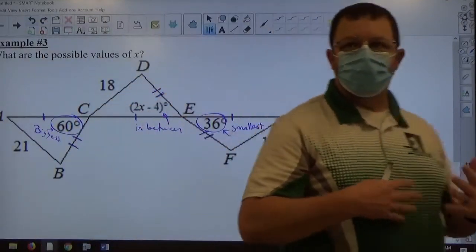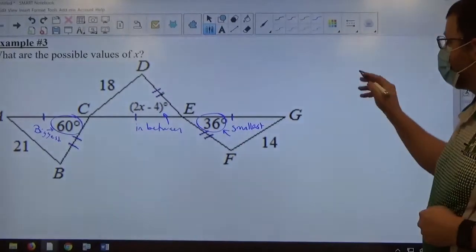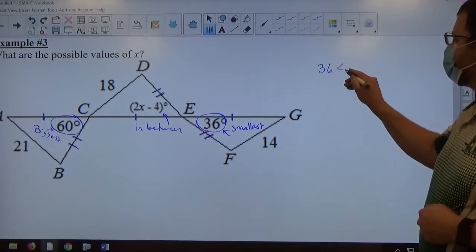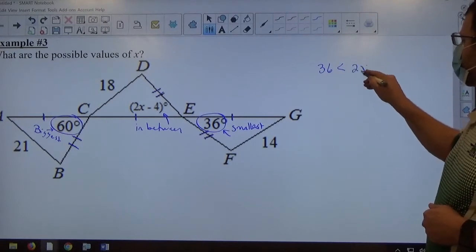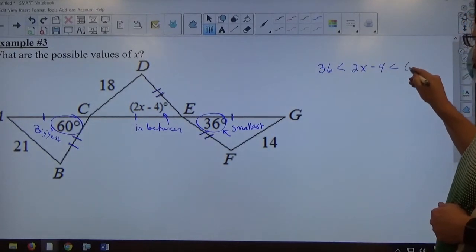In the inequality world, the way we write that is we write the smallest angle, 36, is less than the in-between angle measure, 2x minus 4, is less than the biggest angle measure, 60.